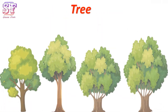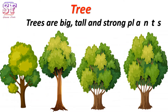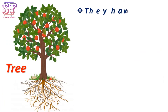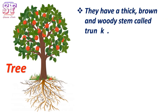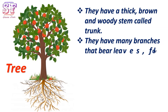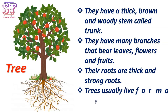Trees are big, tall, and strong plants. They have a thick, brown, and woody stem called a trunk. They have many branches that bear leaves, flowers, and fruits. Their roots are thick and strong. Trees usually live for many years.